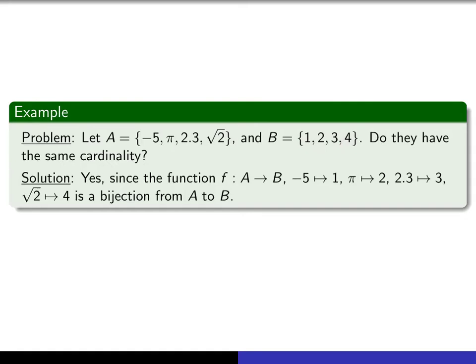But let's use the precise working definition to explain why that's the case. We just simply have to produce a bijection from A to B. And I think it's pretty clear that if we map minus 5 to 1, pi to 2, 2.3 to 3, and root 2 to 4, that that really is a bijection. It's 1 to 1 and it's onto. And therefore, by definition, these two sets have the same cardinality.